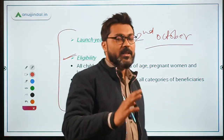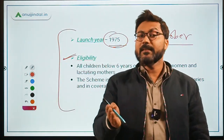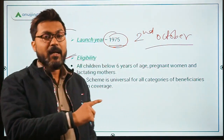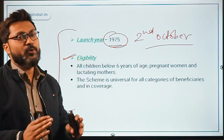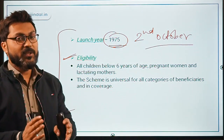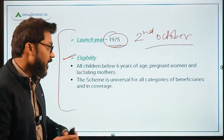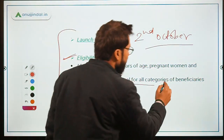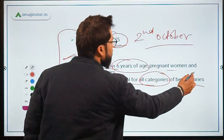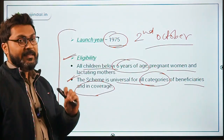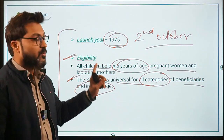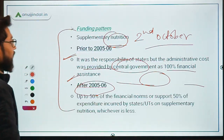Regarding eligibility, all children in the age group of 0 to 6 years are eligible to get the benefits and services under this umbrella scheme. And of course, if we want to provide development to a child, then pregnant women and lactating mothers also need to be included. The scheme is universal for all categories of beneficiaries — all children below 6 years of age, pregnant women, and lactating mothers are eligible.